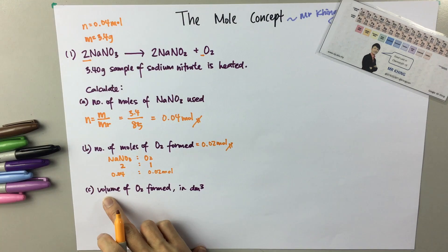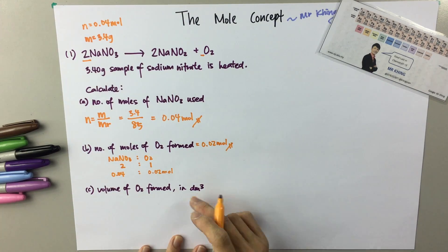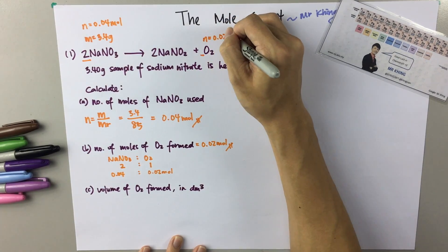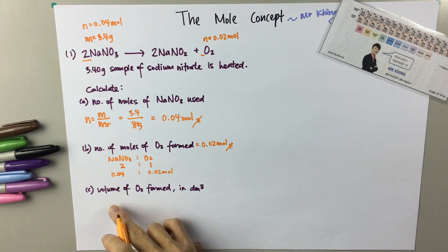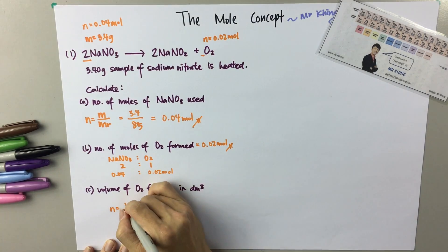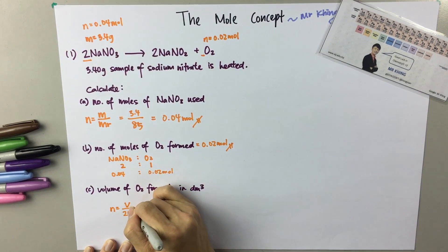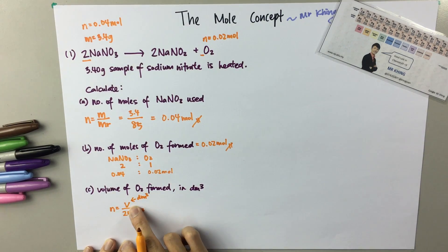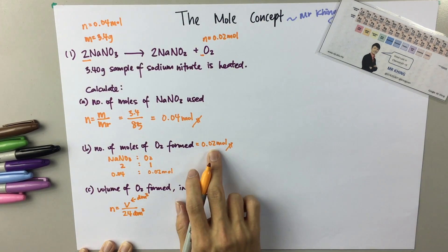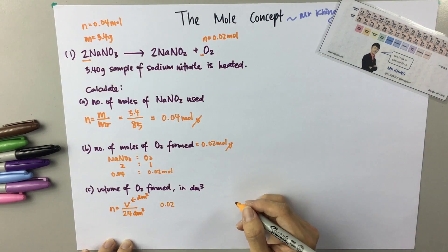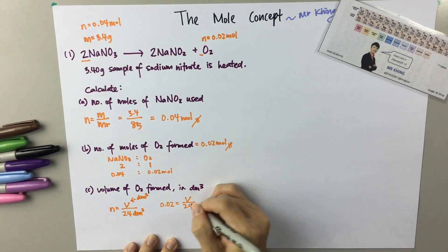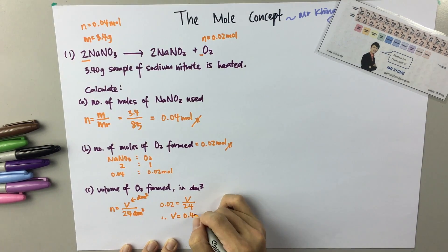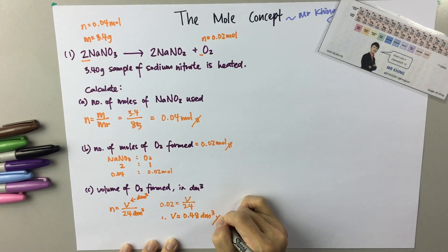Then they ask for the volume of oxygen formed in dm³. We know that the number of moles of oxygen is 0.02 moles. Remember the formula: N equals to V over 24 dm³. We want to look for the volume. So 0.02 equals to V over 24, and eventually V equals to 0.48 dm³.